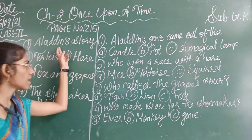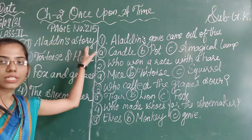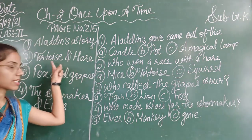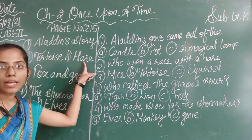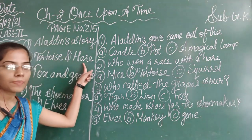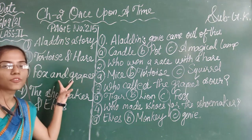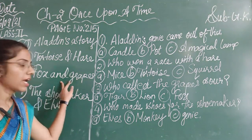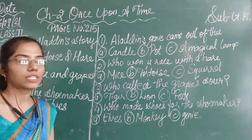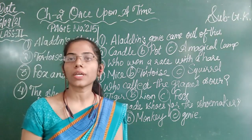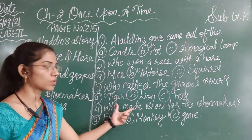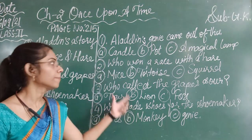The first story is about Aladdin. The second story is related with the tortoise and the hare. The third story is related with the fox and the grapes. And the fourth one is the shoemaker and the elves. These four stories are on page number 250, and related questions are also given to you.